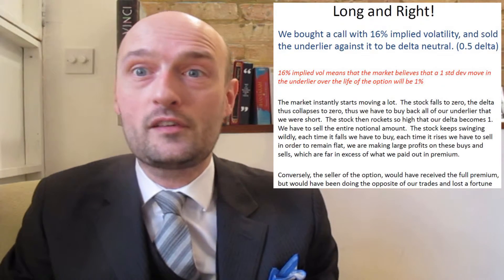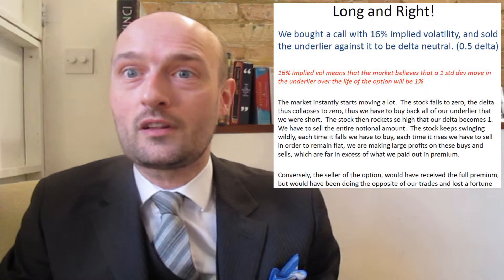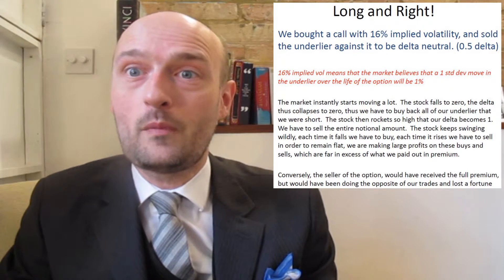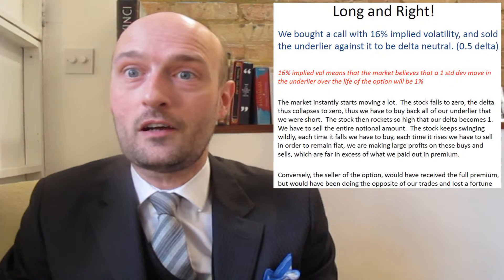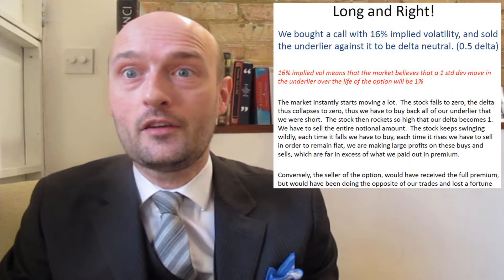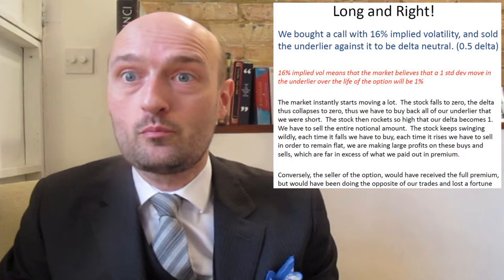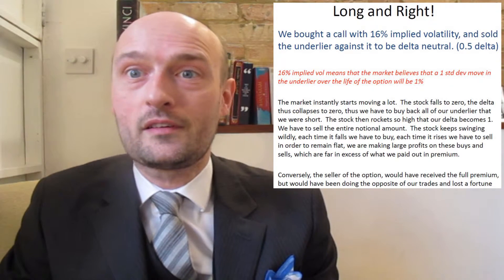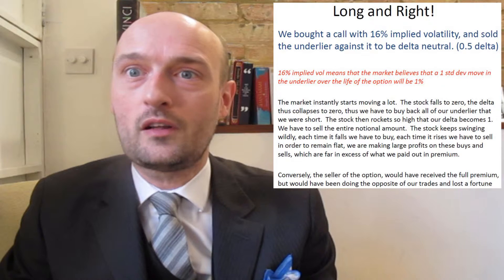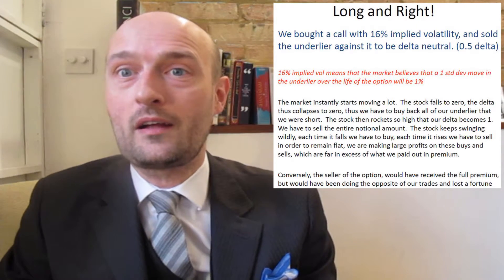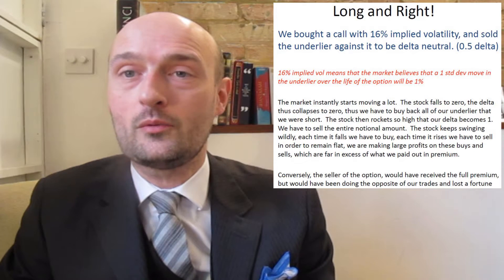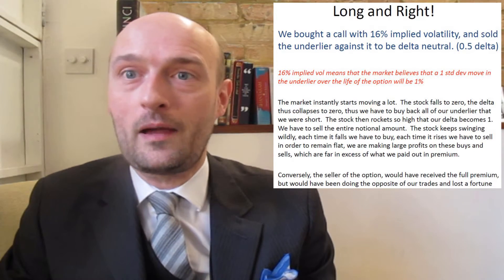So essentially if the underlying swings around about one percent a day and you diligently rehedge your delta, you make back the amount you spent on options premium. When it moves less, you make back less. When it moves much more, you make much more than you spent on premium. That's what it means to be long volatility. The person on the other side is short volatility and has the exact opposite P&L — keeping the entire premium in the low-vol case but losing a ferocious amount in the high-vol case.